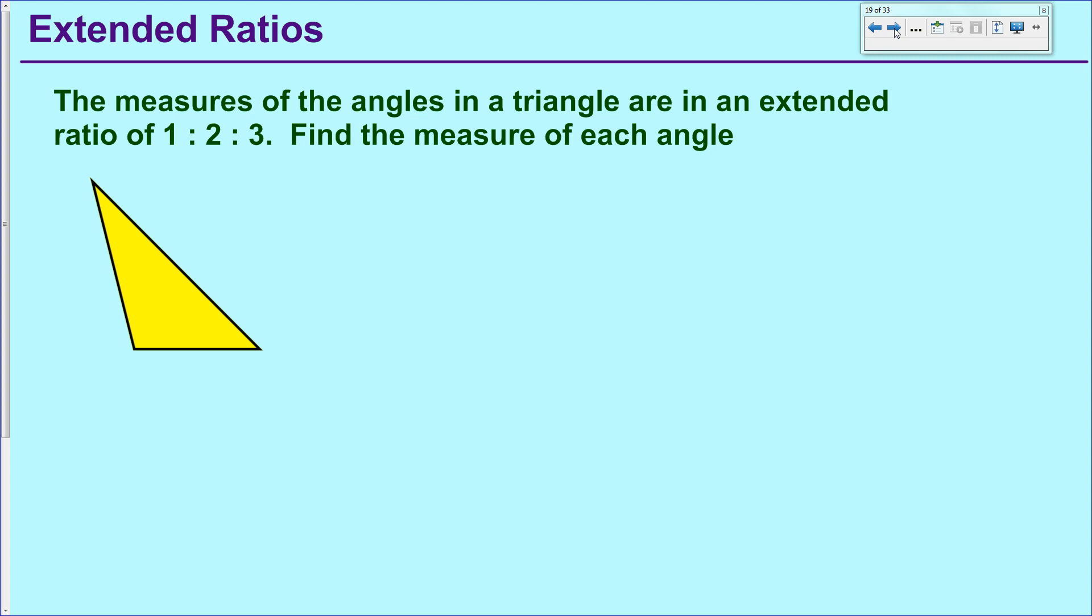And again, as you might suspect, we're going to assign the values of x, 2x, and 3x to the angles of the triangle. Then we got that triangle angle sum theorem that says that all the angles of a triangle should add up to be 180, which means that we get a nice little equation like that. Combine like terms and solve. You get x equals 30.